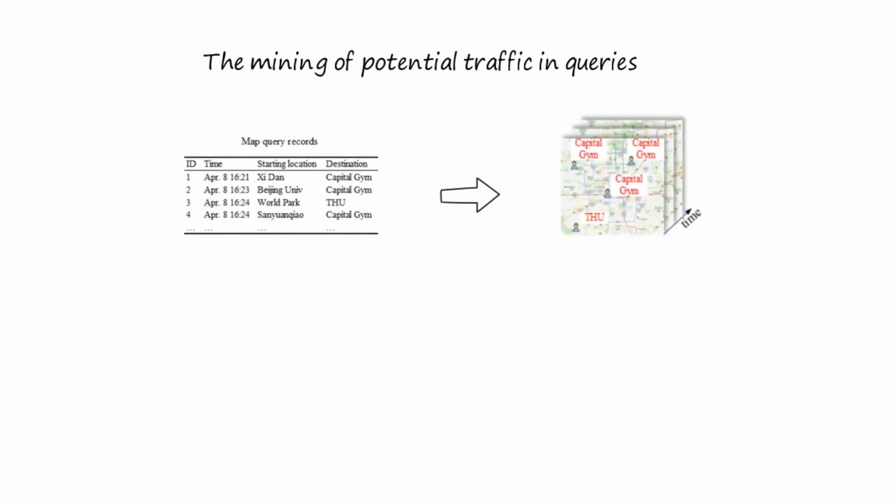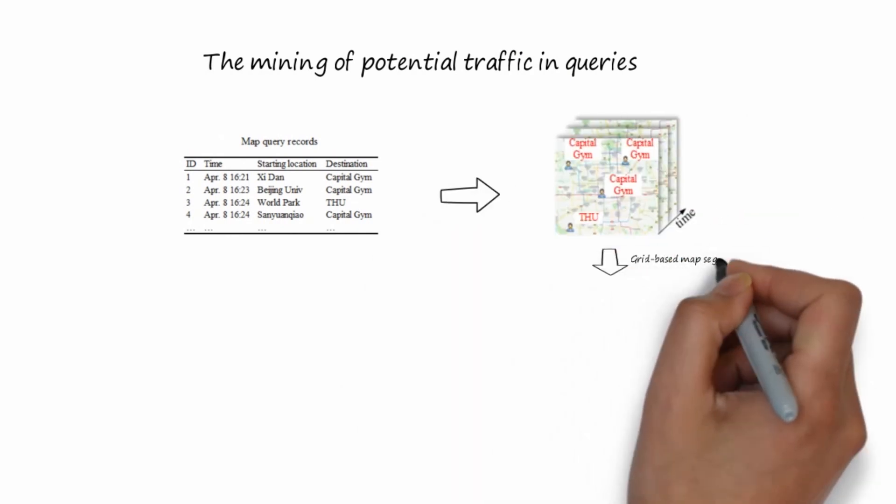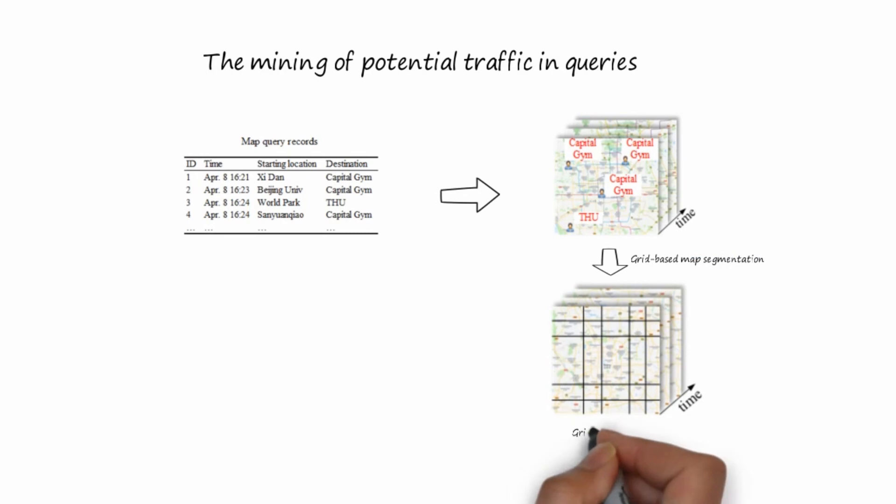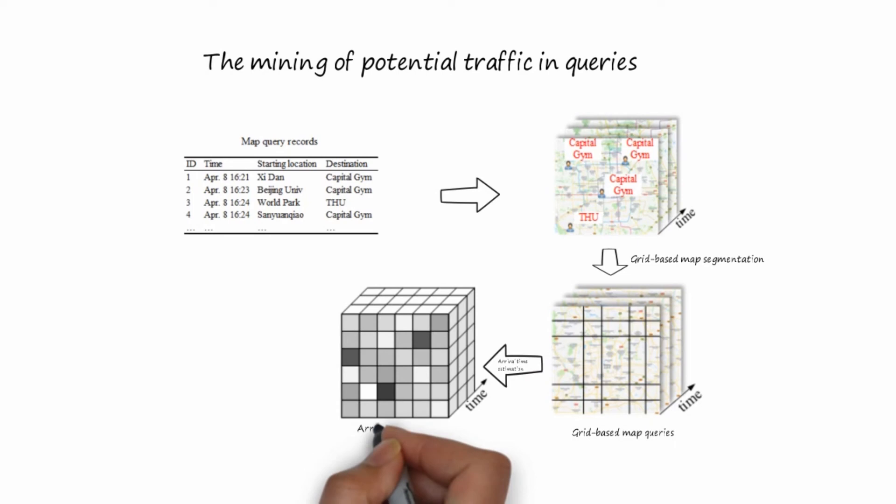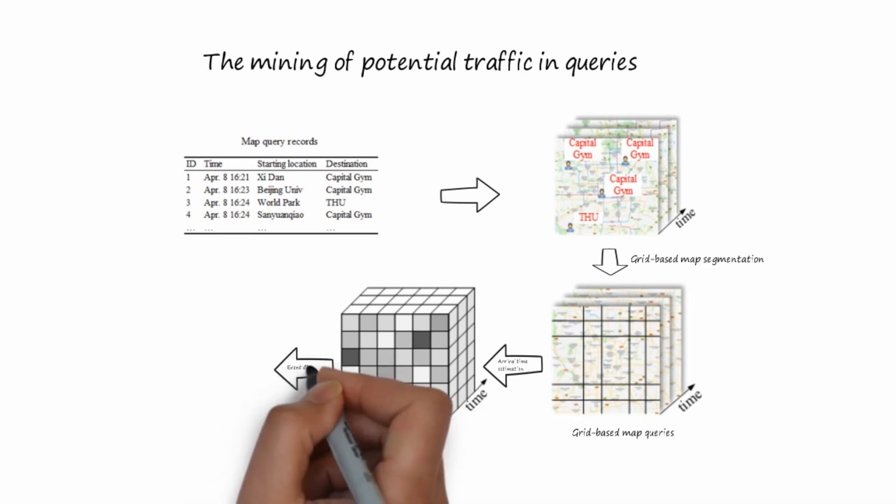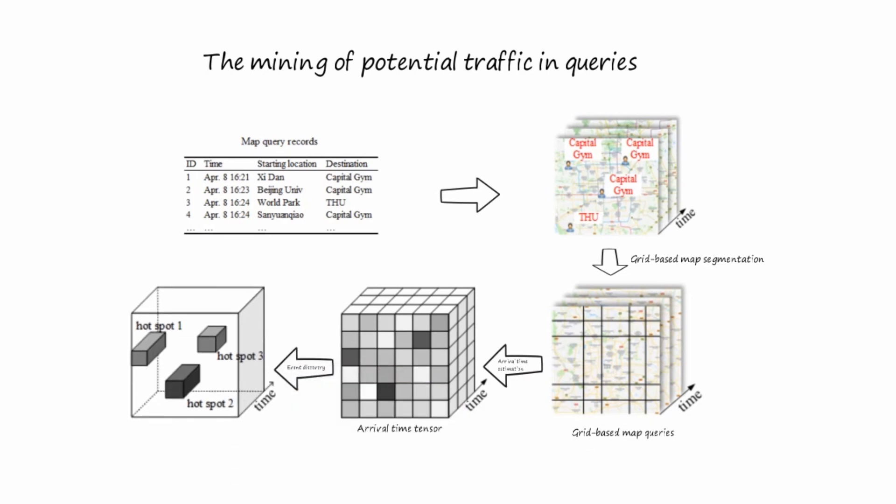First, a set of map queries is segmented into grids. Then the arrival time at each query's destination can be estimated, thus constructing an arrival time tensor. An event discovery algorithm is used to discover the events from the arrival time tensor.